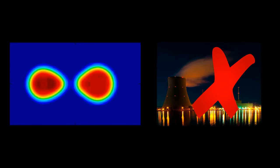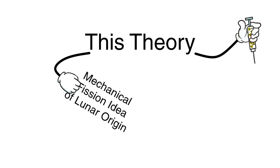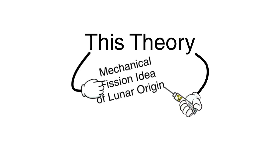Nuclear Bomb Theory. Right, the previous theory talked about mechanical fission, and it had nothing to do with nuclear energy. This theory, however, takes the mechanical fission idea of lunar origin and adds nuclear fission into it.